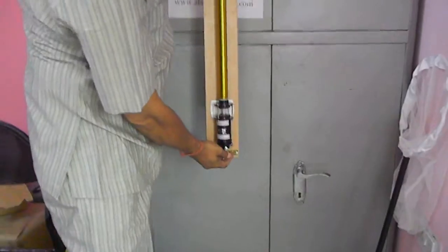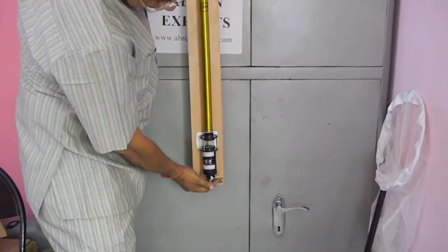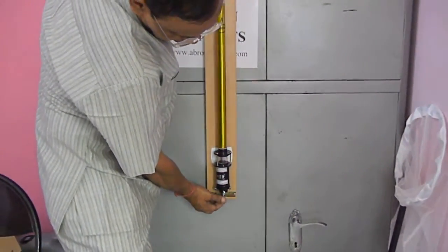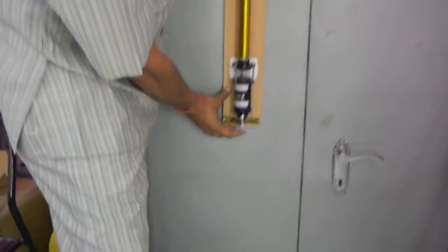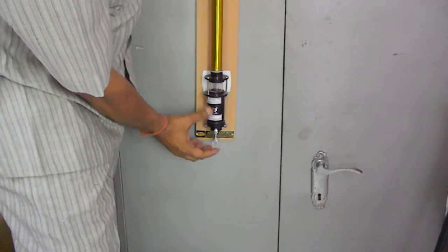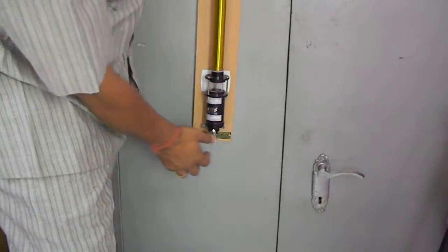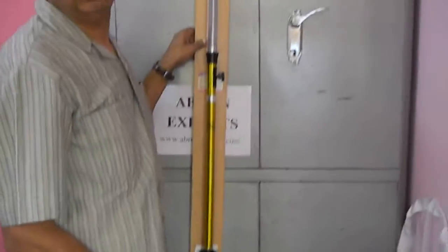This should be moving freely when you hang it. It should be hanging properly like this. You can see now it is freely moving. Then tie the screws from the other side. You can test it as detailed in the manual we have provided.